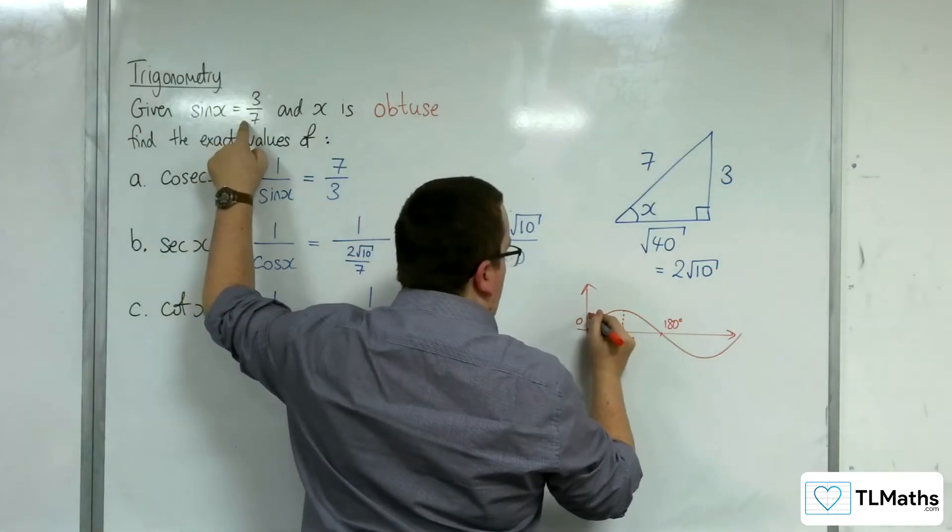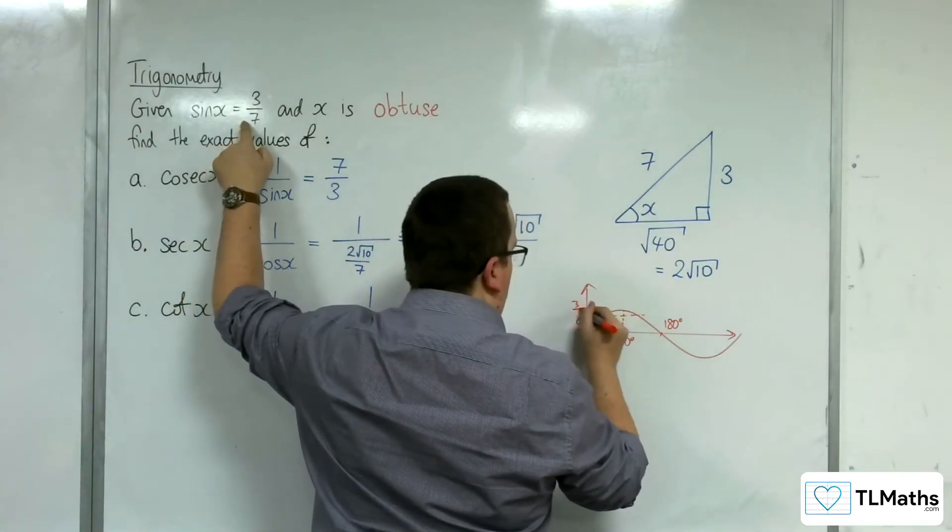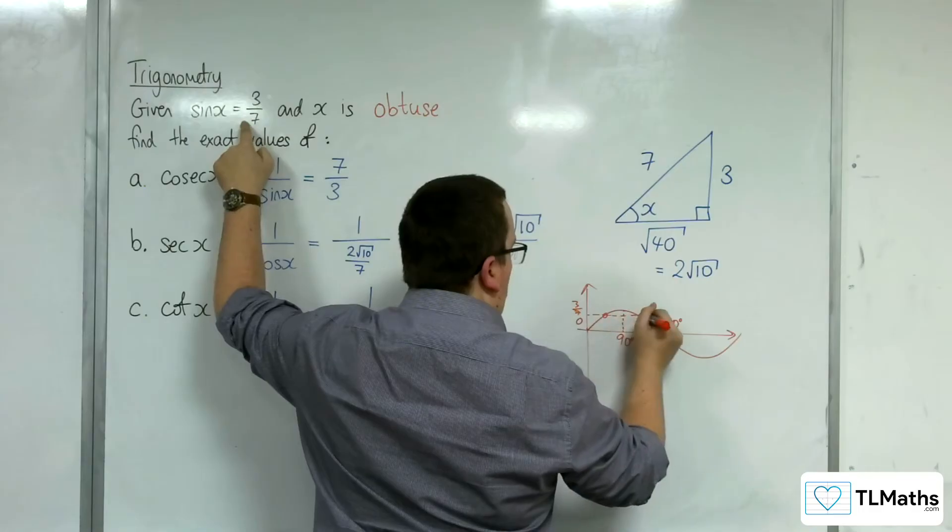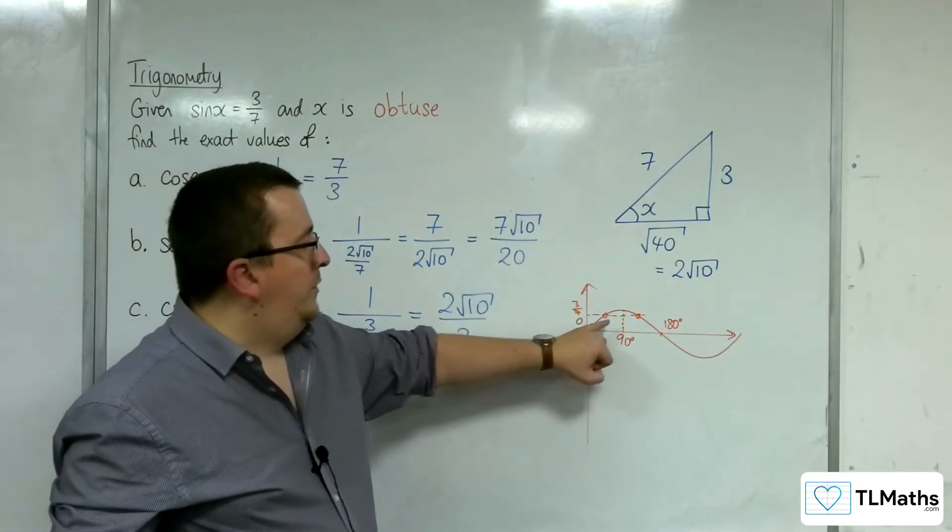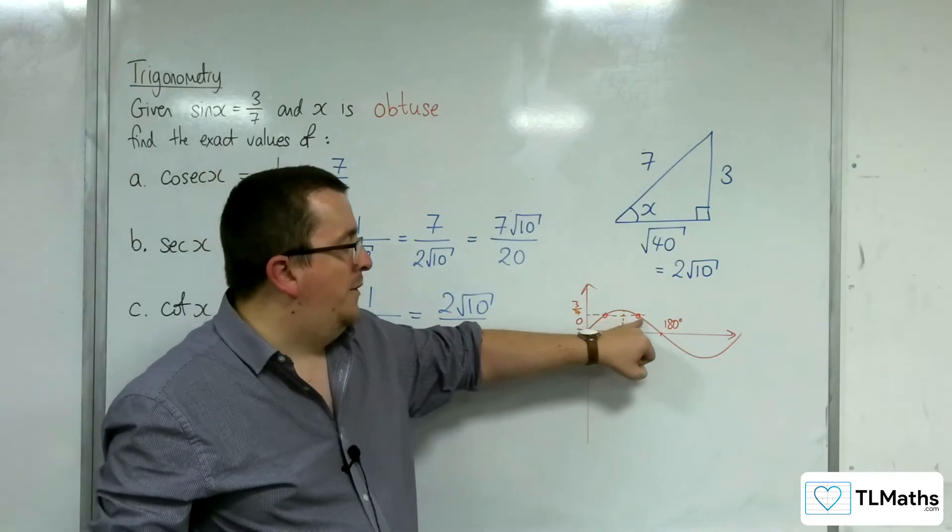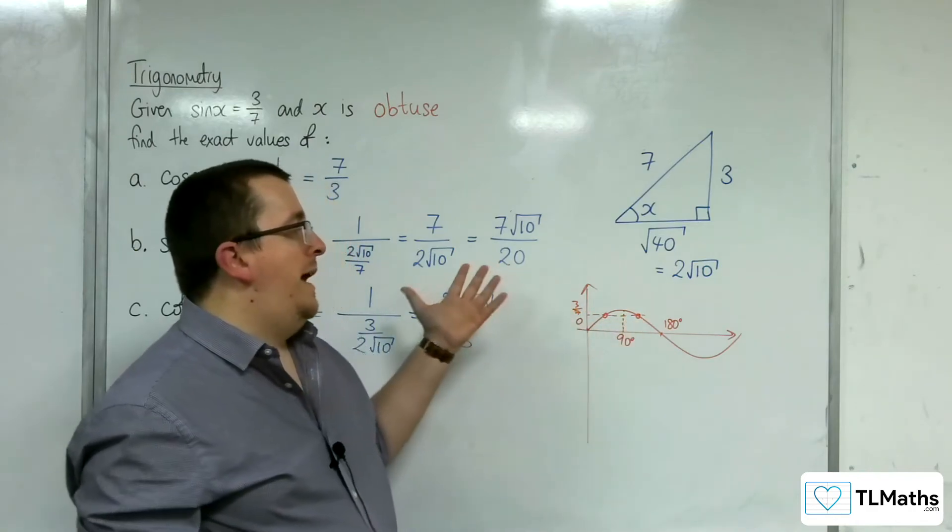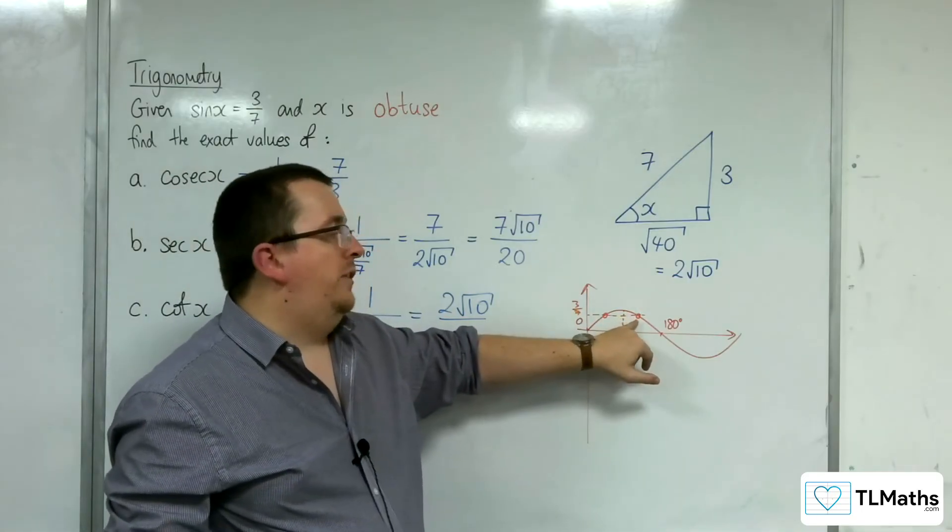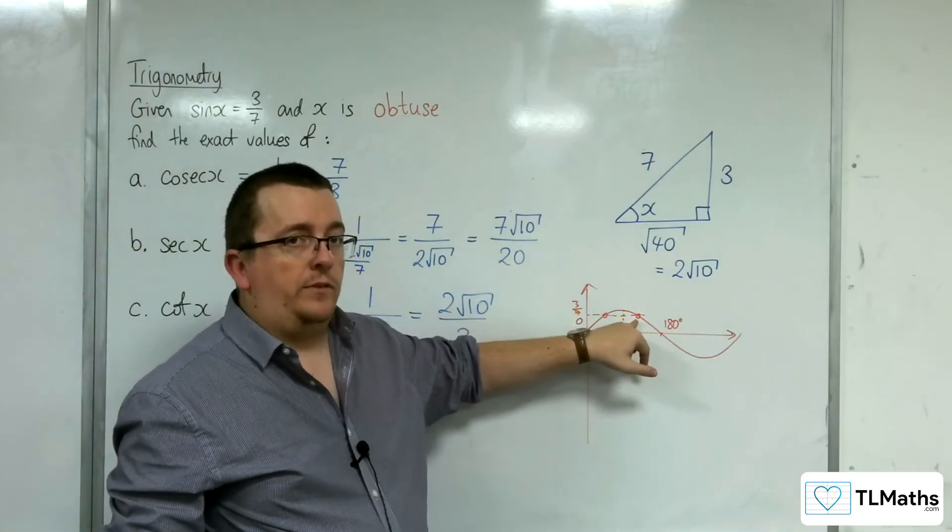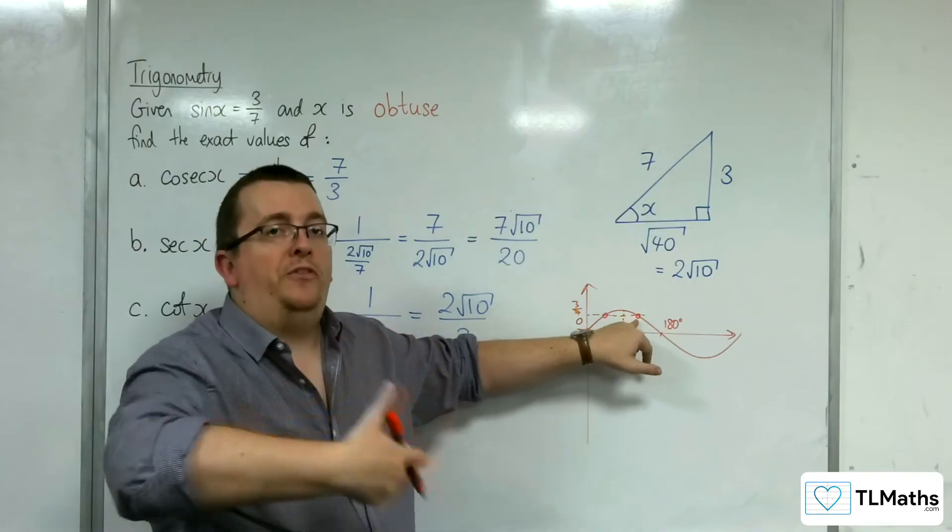Sine x being 3/7, we can see we've got these solutions. As you can see, because they are both above the x-axis, regardless of whether x is acute or obtuse, sin x equals 3/7. It is a positive value in both cases.